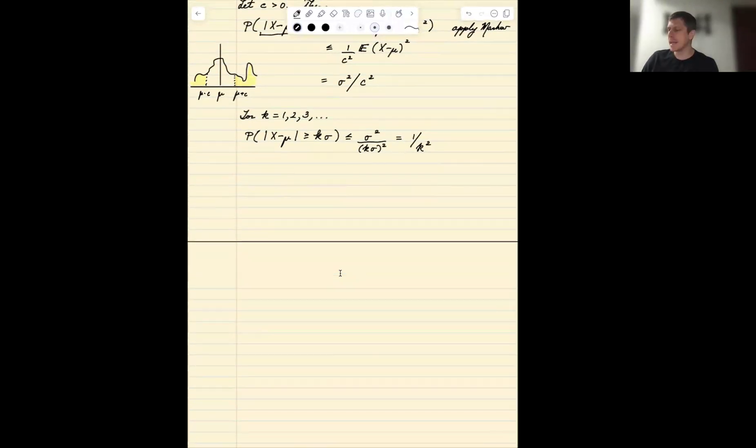So what does this tell me? Let me just create a little bit of a table here. The probability that any generic random variable deviates from its mean by two standard deviations is at most one fourth; by three standard deviations, at most one ninth; four is at most one sixteenth; five is at most one over 25.